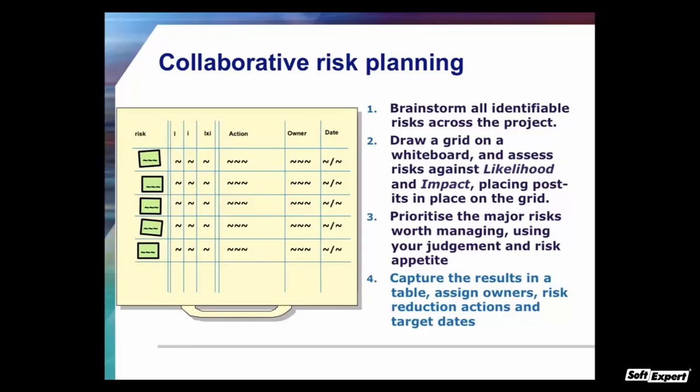Good risk management means moving risks down on both axes — lowering both likelihood and impact. When assigning owners collaboratively, it's not you as project manager saying 'John, I want you to own this risk.' You list the actions and in collaboration ask: who is the best person to own this risk? Is someone in this room able to own it or do we need to draw someone else in? That is the best way to get buy-in and shared ownership so you don't end up owning all the risks yourself. At minimum, your risk register must include what action you're going to take and who is responsible for making sure it happens.